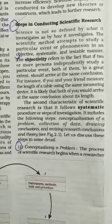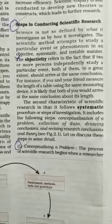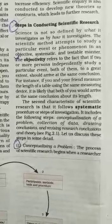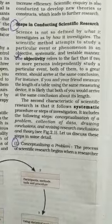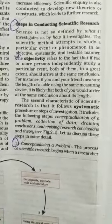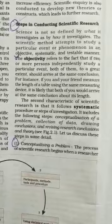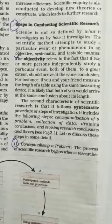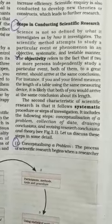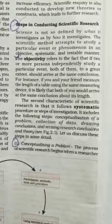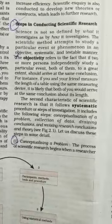Good morning children. In continuation with chapter number 2, today we are going to discuss about the steps in conducting scientific research. Whenever we conduct a particular experiment or do any research in a scientific manner, it has an objective and it is done in a systematic manner.